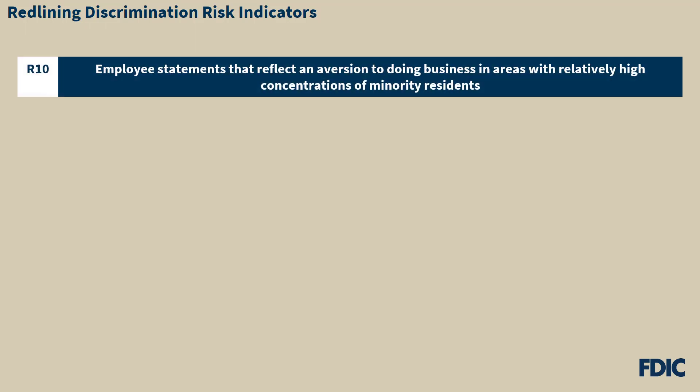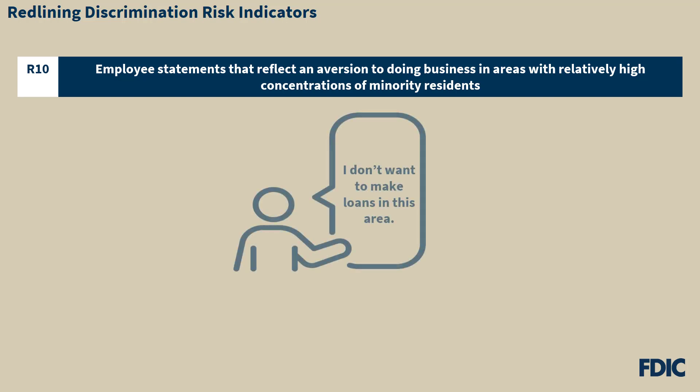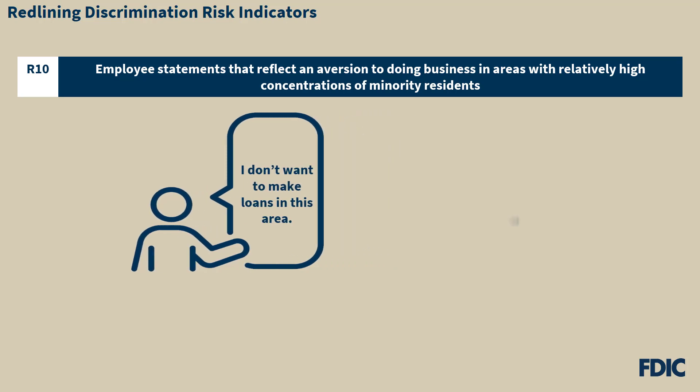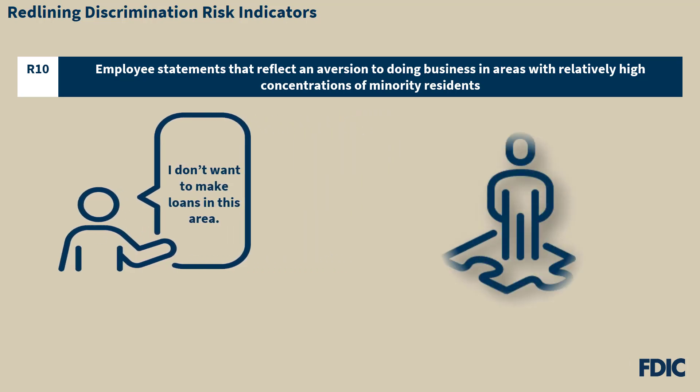R10 addresses employee statements that reflect an aversion to doing business in areas with relatively high concentrations of minority residents. For example, if an employee makes statements that indicate distaste for making loans in a certain neighborhood or section of town, and these areas have a high concentration of minority residents, there is redlining risk.